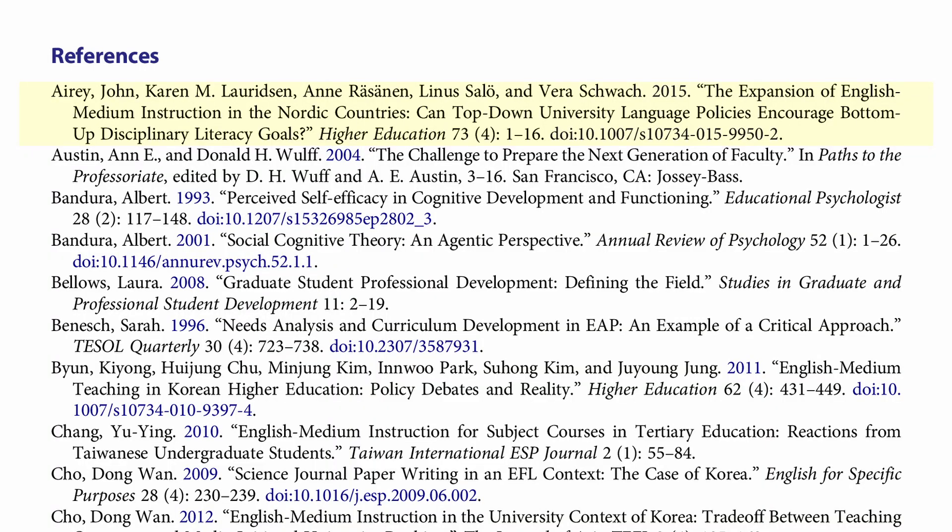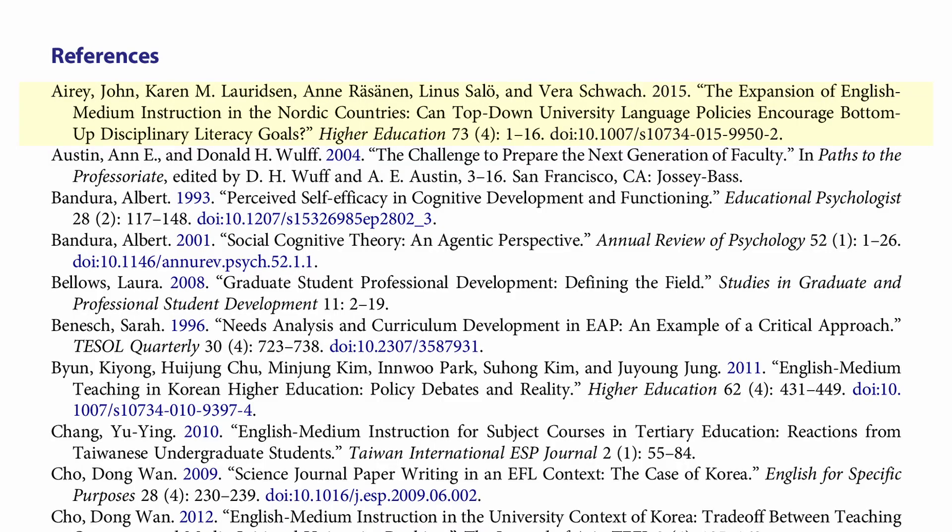In Chicago and MLA, if you've got a work by multiple authors, the first name is going to be last name first: last name comma first name — Aerie comma John. And then the rest of the names can be in normal order: Karen M. Lurdsson, Anna Rassanen, Linus Salö, and Vera Verschwach. So last name first at least for the first author; the rest can be in normal order. Now in APA, every single name is family name first. So in APA this would be Aerie comma J — in APA, first names or personal names are abbreviated. Then you'd have Lurdsson comma K, comma — it looks kind of awkward, I know. And then you've got the year.